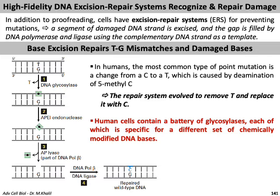Human cells contain a battery of DNA glycosylases, each specific for a different set of chemically modified DNA bases.